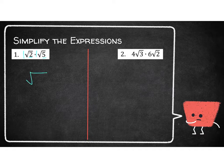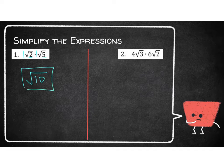On the inside, 2 times 5 gives me 10. I can't break 10 down at all because it just gives me 2 and 5, and there are no pairs to take out. So I'm going to leave it as the square root of 10.